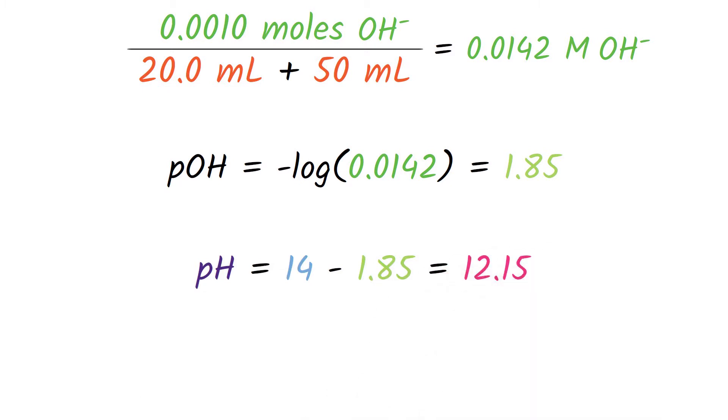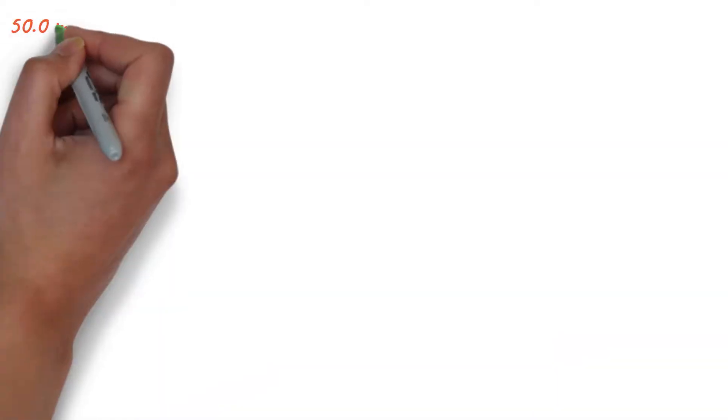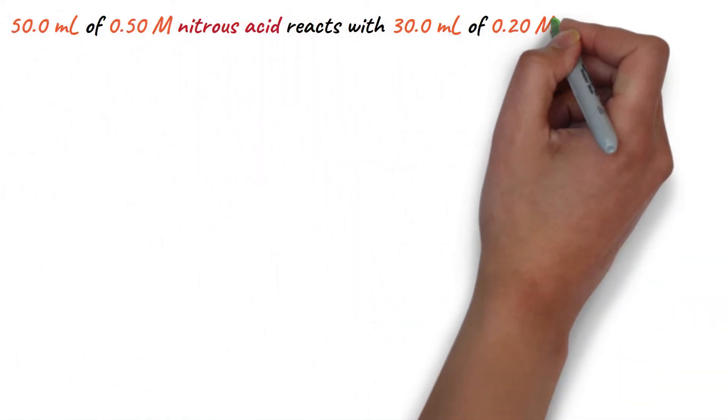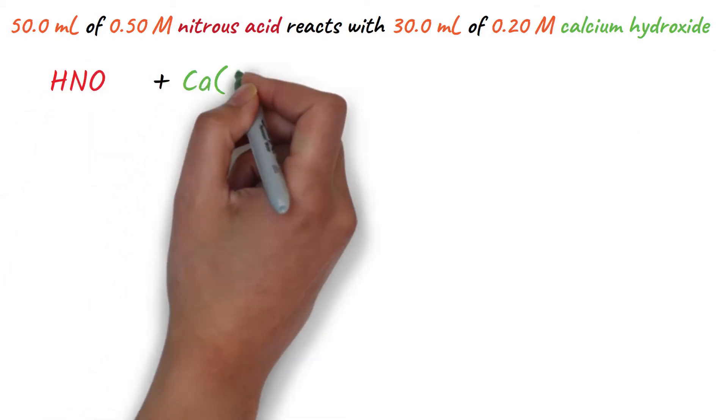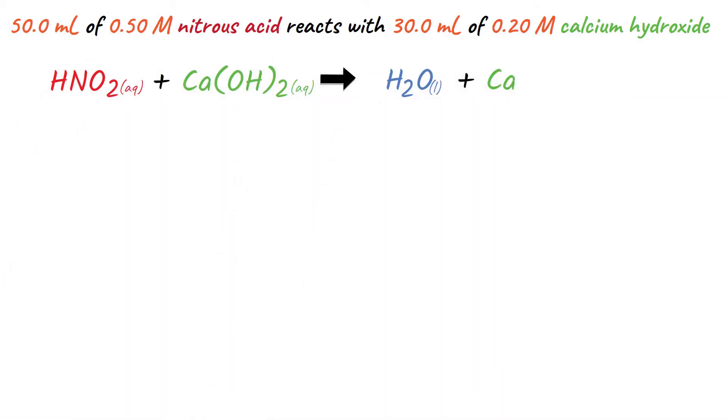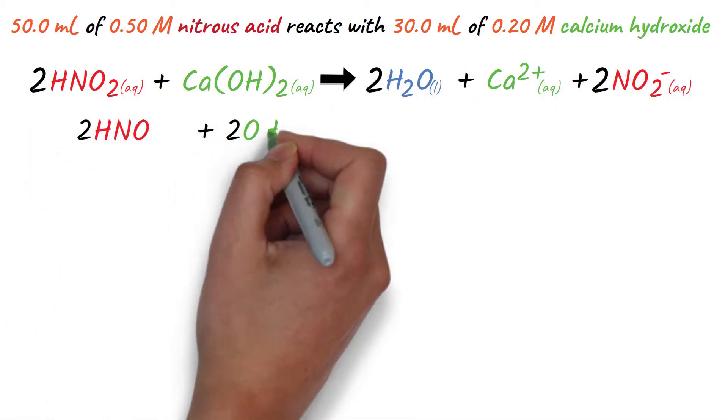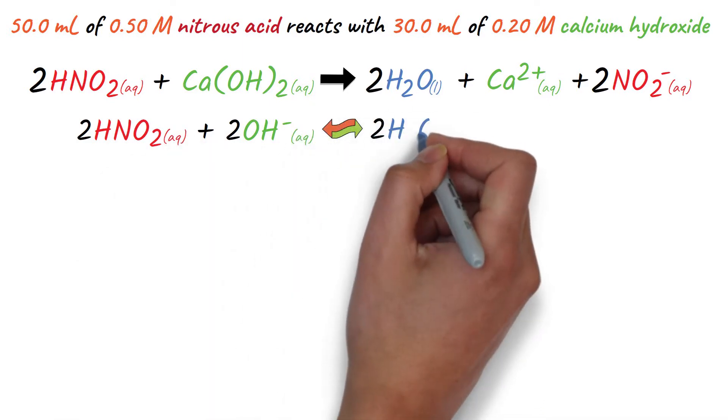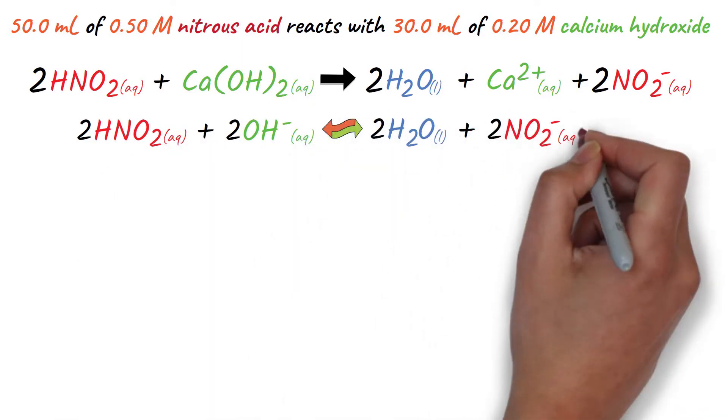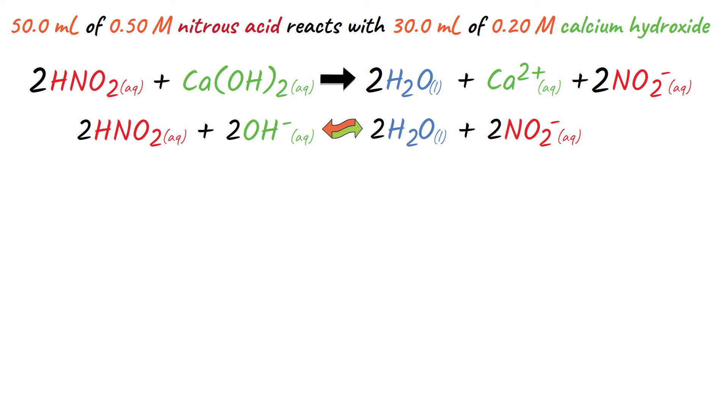This was pretty easy because a strong base was not the limiting reagent. However, let's look at a problem where the strong base is the limiting reagent. Let's say we have 50 milliliters of 0.5 molar nitrous acid, and we react that with 30 mils of 0.2 molar calcium hydroxide. First, let's write out a molecular equation and balance it. Now, we can write out the net ionic equation, omitting calcium because it's a spectator ion. Nitrate is the conjugate weak base of nitrous acid.